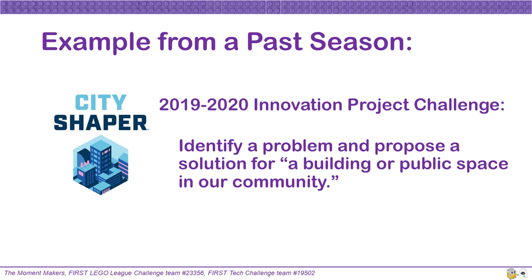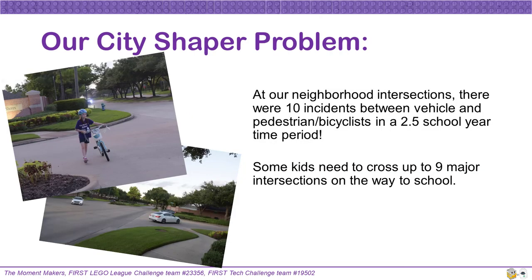Our project example is from the 2019 to 2020 City Shaper season. That year, we were challenged to identify a problem and propose a solution for a building or public space in our community. As we go through this example from the past, remember that your team's own project must fit the current year's topic. When looking for our City Shaper problem, there were 10 incidents between vehicles and pedestrians or bicyclists in a two and a half school year period at our neighborhood intersections. Some kids in our area even need to cross up to nine major intersections on their way to school. We chose to focus on this problem because it was a really big and dangerous problem in our community.